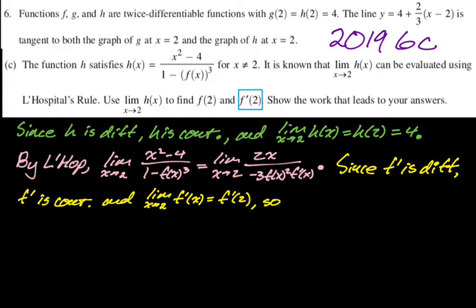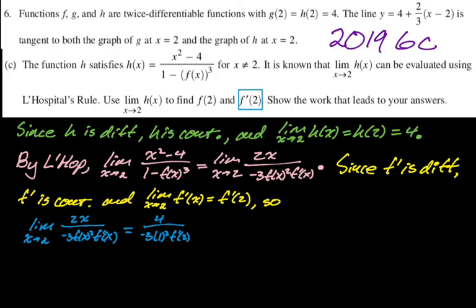Now I'll evaluate: the limit as x approaches 2 of 2x/(−3[F(x)]² · F'(x)) gives 4/(−3 · (1)² · F'(2)). We know the limit of H(x) as x approaches 2 is H(2) = 4. So 4/(−3 · F'(2)) = 4, which we can solve algebraically to get F'(2) = −1/3.